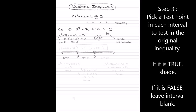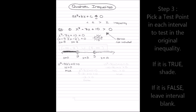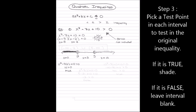The next step is to pick a test point in each one of my intervals. I pick 0 for the first, 3 for the next, and 10 for the last. I'm going to test them in the original inequality. I'm putting 0 in for all of my x's, and 10 is greater than 0, so I say true. That means I'm going to shade that area.